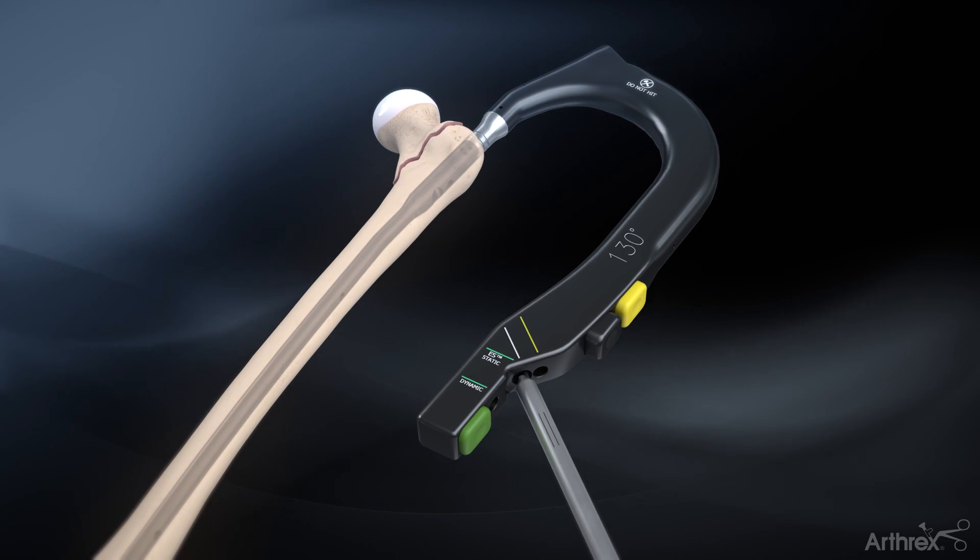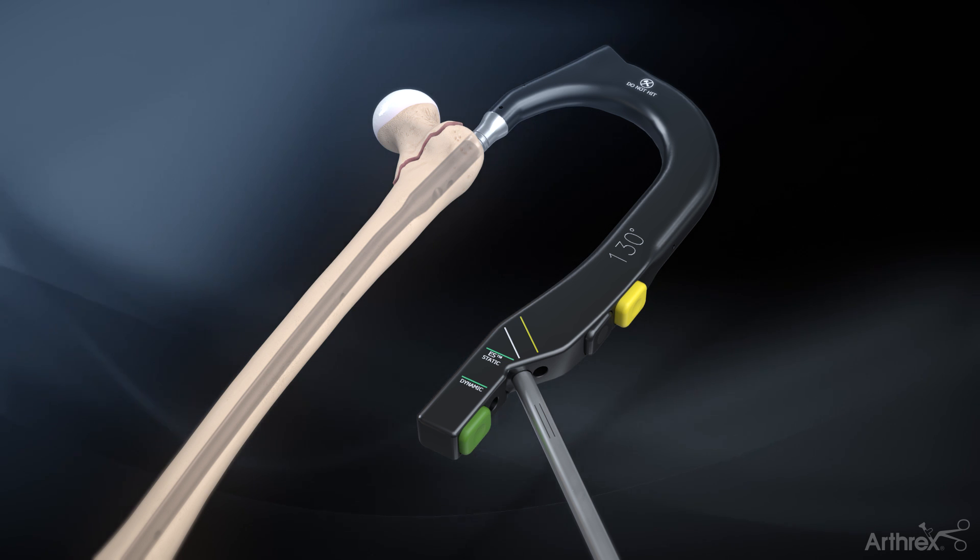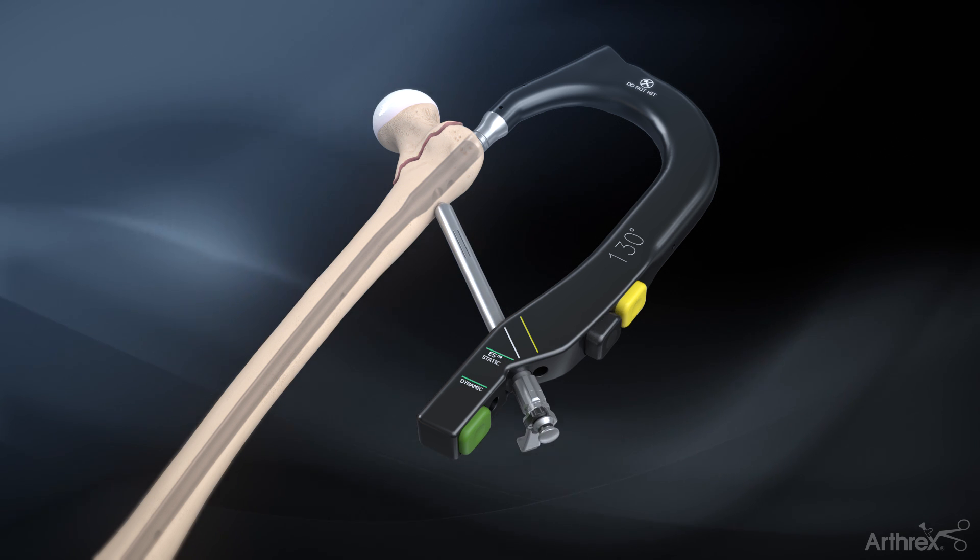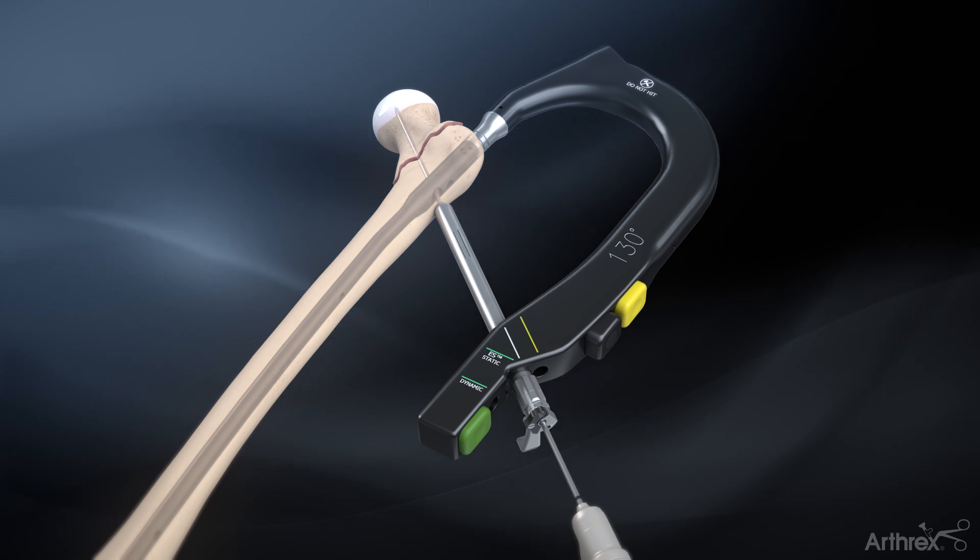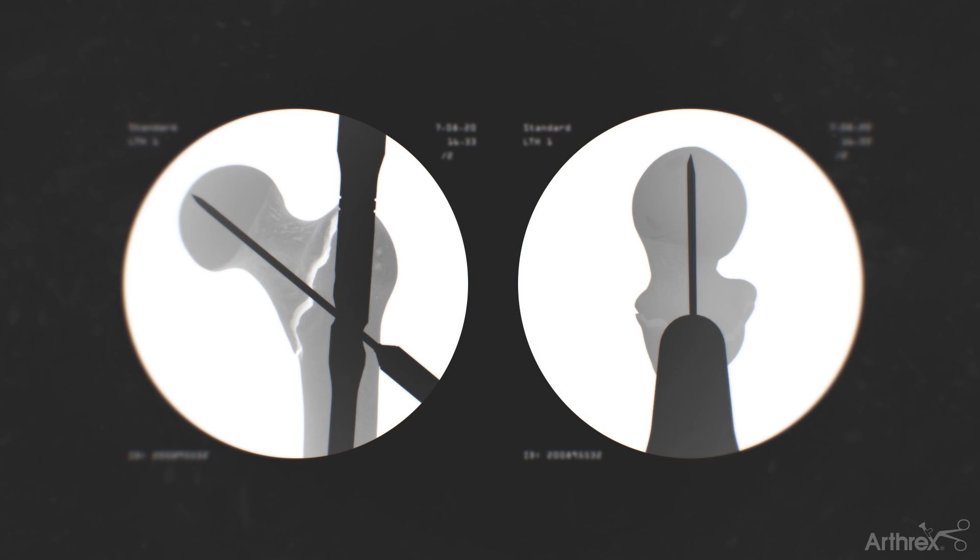Once the desired nail depth has been achieved, insert the lag screw triple sleeve assembly through the targeting arm by pressing the black button. Slide in the assembly until it contacts the lateral cortex of the femur. Remove the obturator and place the 3.2 mm lag screw guide pin through the pin guide. Verify the pin depth and trajectory using fluoroscopy.